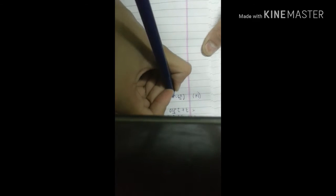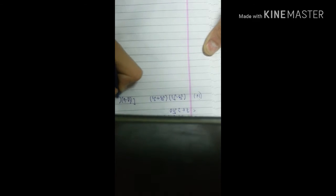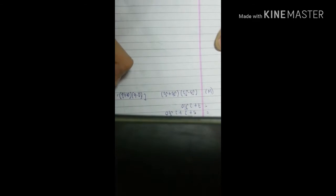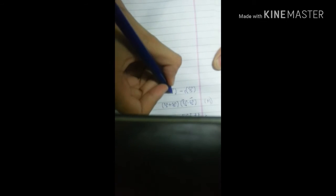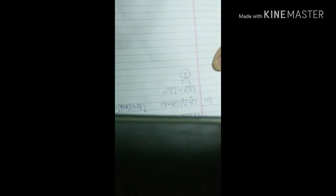The fourth part is (√5 - √2)(√5 + √2). This is again the identity (a - b)(a + b) = a² - b², where a is √5 and b is √2. So we get (√5)² - (√2)² = 5 - 2 = 3. The answer is 3.